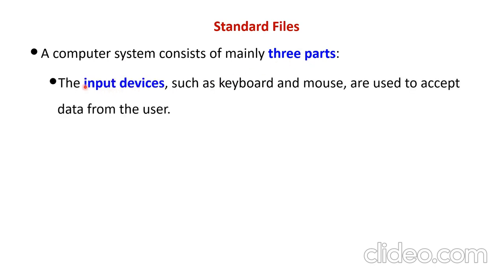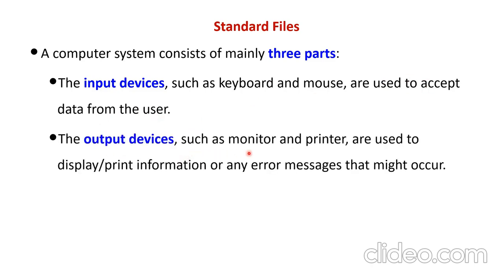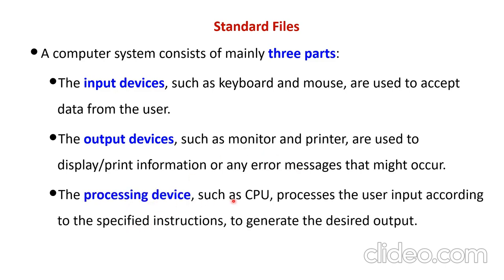First one, you call it as an input device. That is keyboard and mouse that are used to accept the data from the user. Output device like monitor and printer that is used to display any information or give any message to the user. And the third one is a processing device such as CPU that processes the user input according to some instruction and gives the desired output to the user.